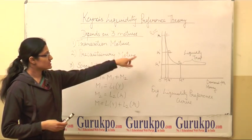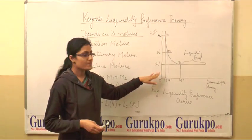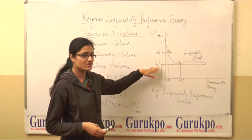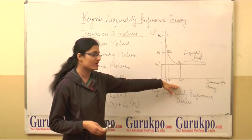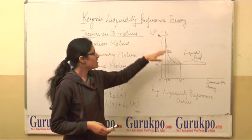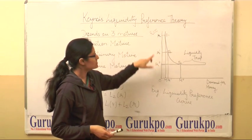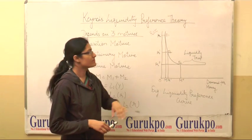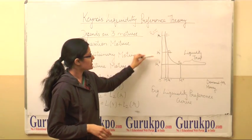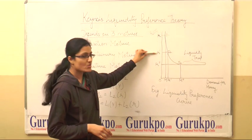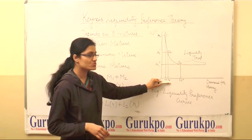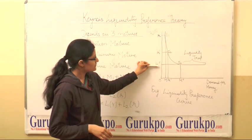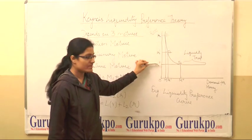This is the liquidity preference curve. We can show the changes in rate of interest and the demand for money. When the rate of interest is R, the demand for money is OM.